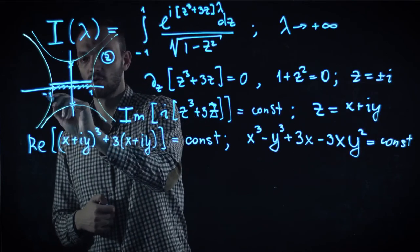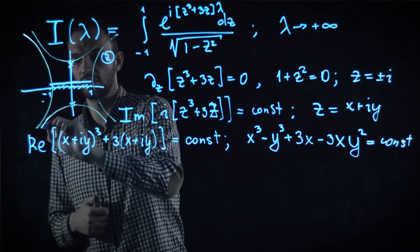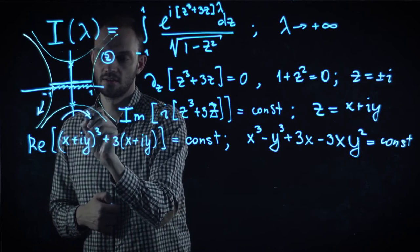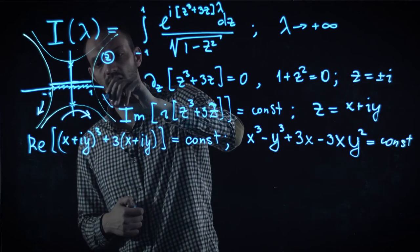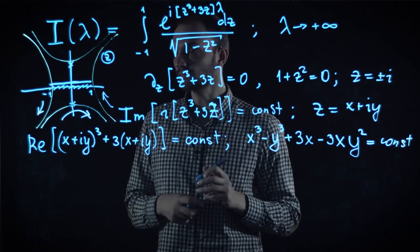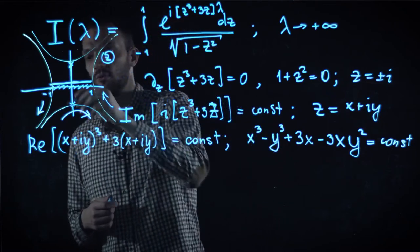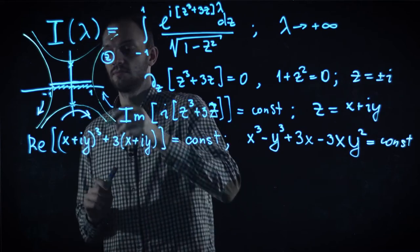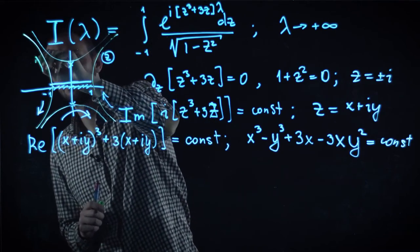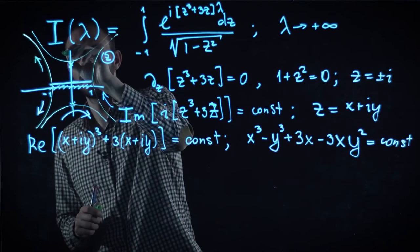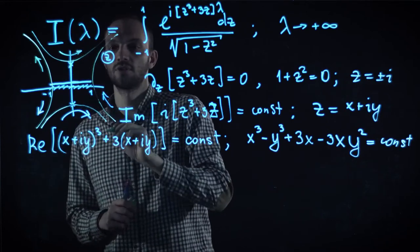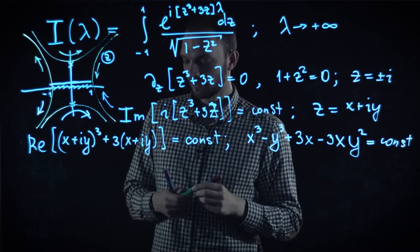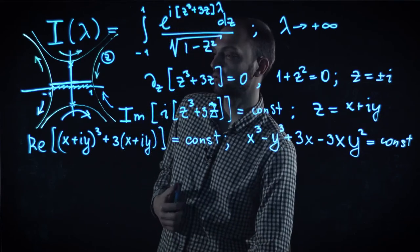First way is to start from minus one, go to minus infinity like that, and finally, like this. And there is, of course, another way. Let me draw it in some different color. So, we can actually go to infinity like that, then pass the upper saddle point, and then go to one again. So, there are two alternative ways to deform our integration contour.